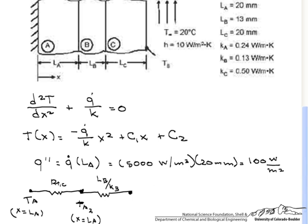And now we have our next temperature, which is at x equals LA plus LB. Again, we have another contact resistance between B and C.